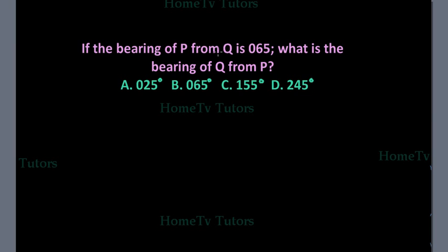If the bearing of P from Q is 65 degrees, what is the bearing of Q from P? OK, so the north pole of Q, the bearing of P from Q is 65 degrees. So what is the bearing of Q from P?